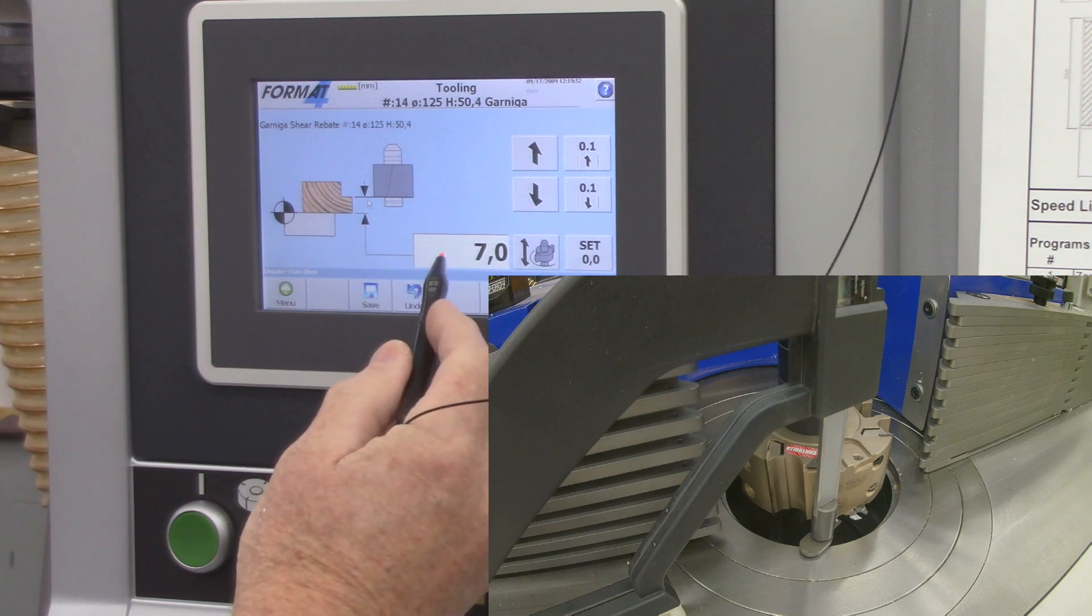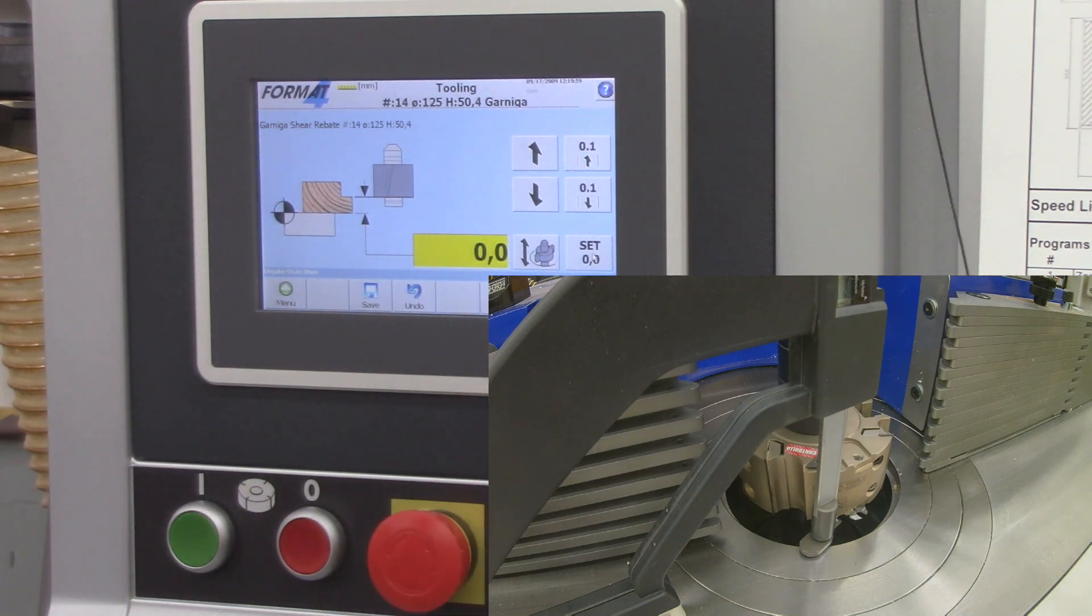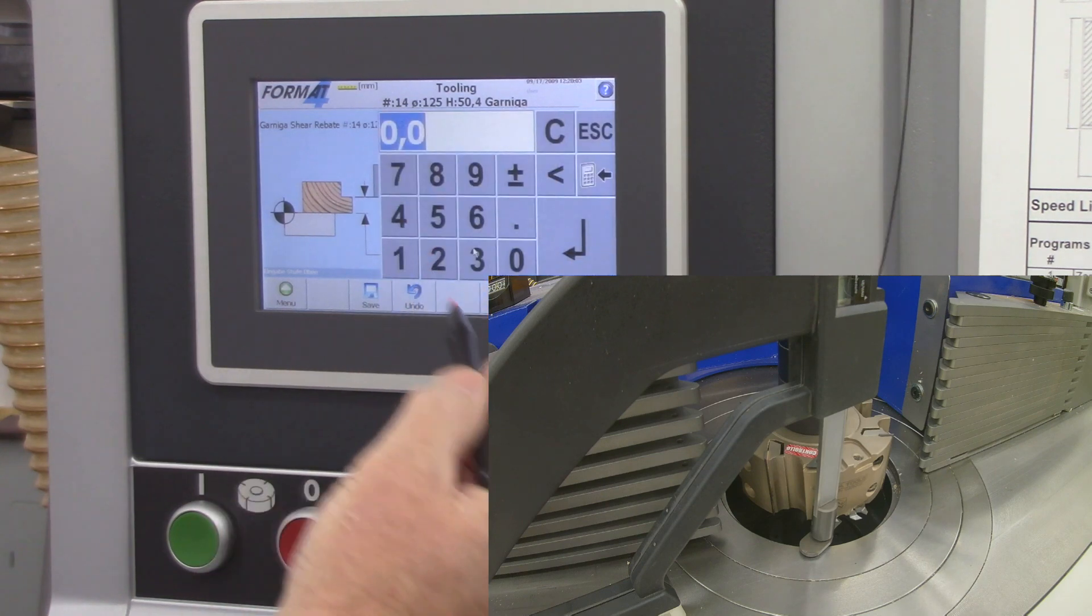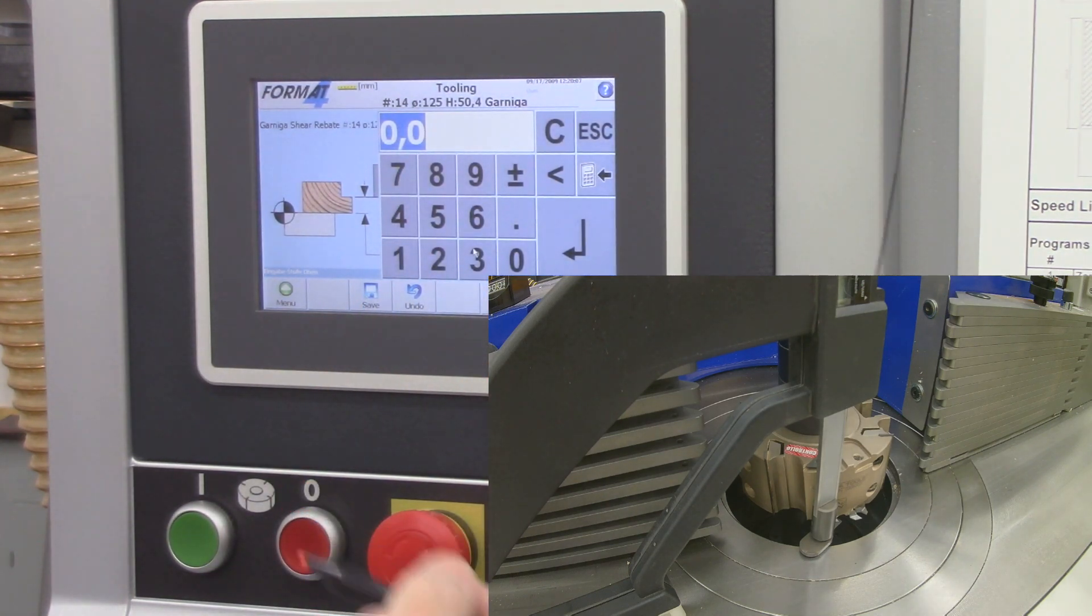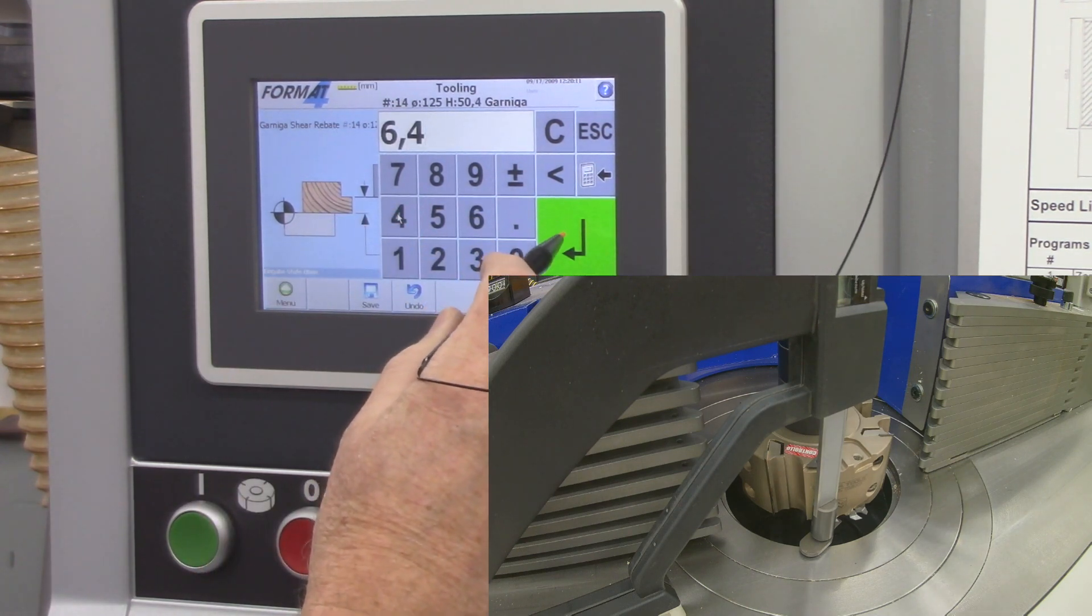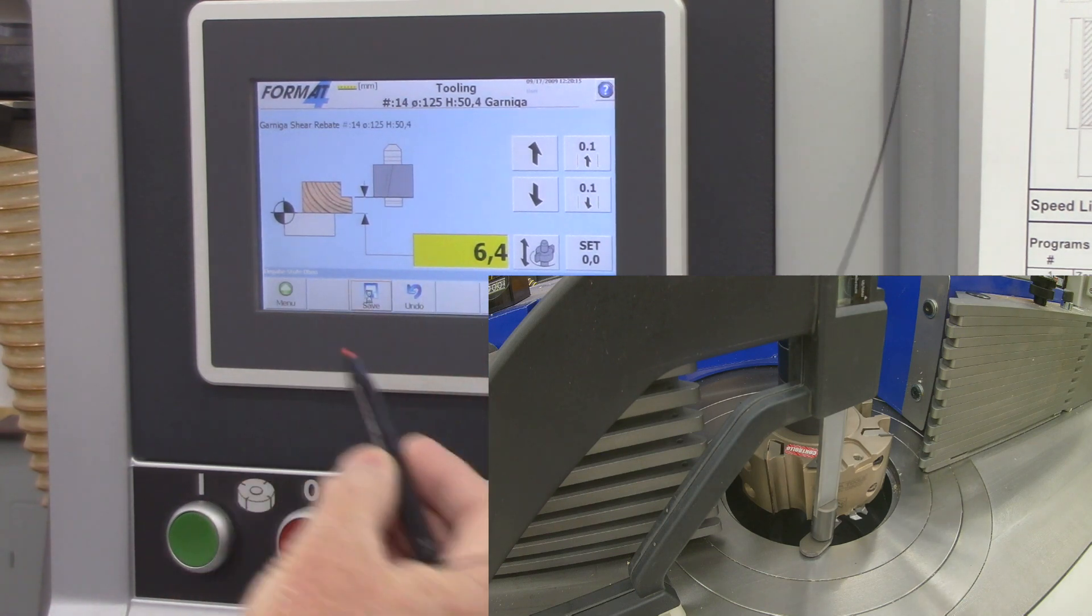So I want to set that. And if I was using the wood method, I would just click set zero and that would go to zero. And then I'd click save and move on. But because I've got the actual measurement of the dimension, 6.4 millimeters, I'll just enter that in there and click save.